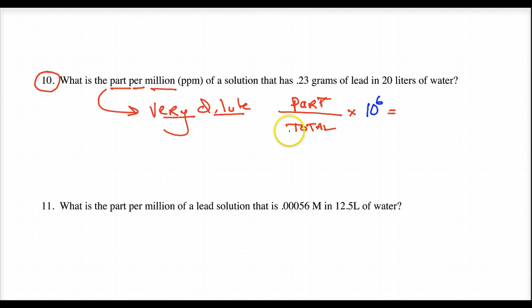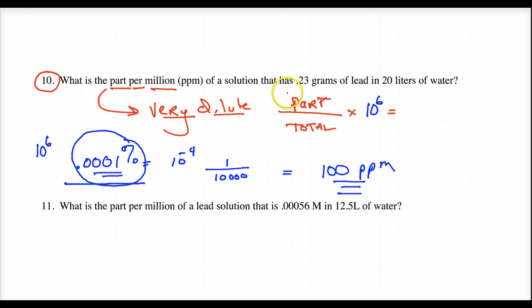Well, because if I've got very, very dilute quantities, I want numbers to reflect some values I can wrap my hands around. Part per million is the same thing as the part per 100, or I would say a percentage. So, the same thing applies. What is the part per million of a solution that has 0.23 grams of lead? So, again, this is not a molarity, so we use the mass of the lead, which is my solute, 0.23 grams in 20 liters of water. Now, it's the mass of the water. We know that the density of water is 1 gram per every 1 milliliter. If you've got 20 liters...